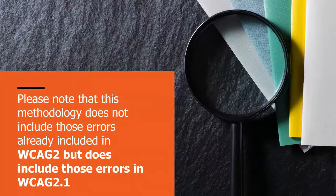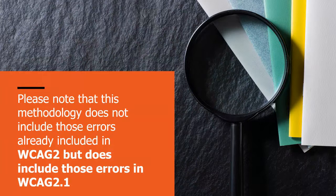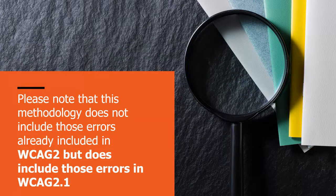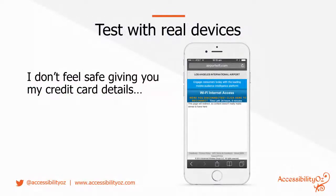This methodology covers a lot of things, but it does not include things that are already in WCAG 2. For example, it doesn't say your images need alt attributes or your headings need to be coded — that's in WCAG 2. But it does include the new errors listed in 2.1, because some countries or organizations might still be meeting WCAG 2 but want to make their content mobile accessible. It's very clear in the methodology when something is a 2.1 requirement, and where we disagree with aspects of 2.1 we make that clear as well.